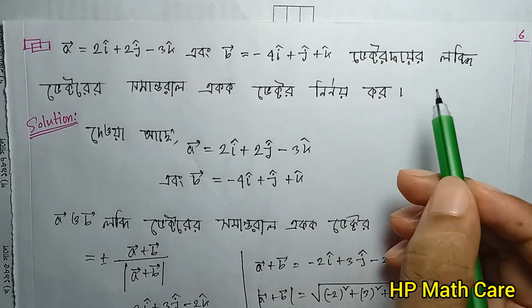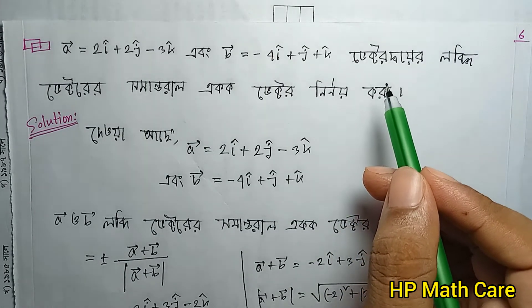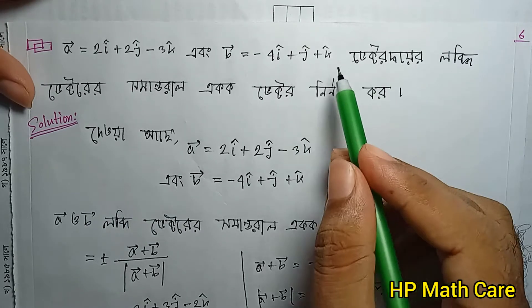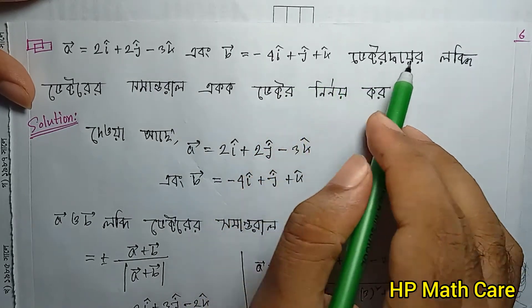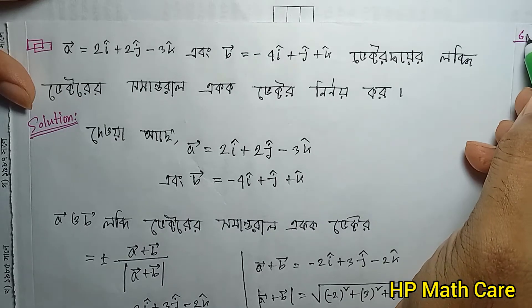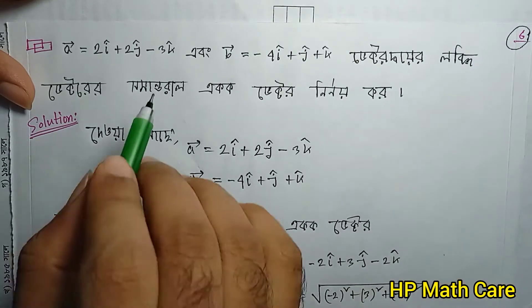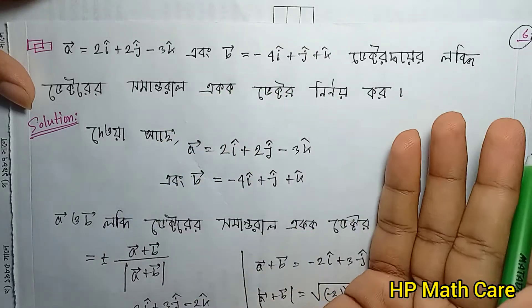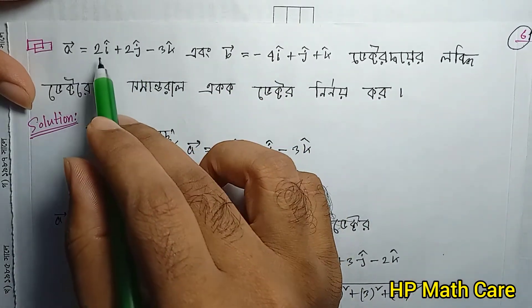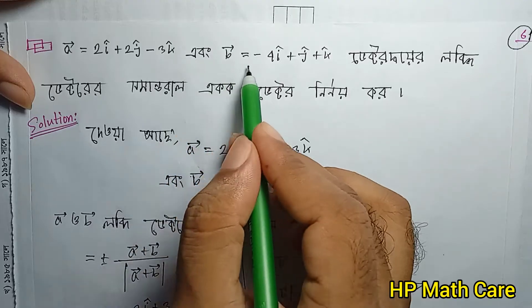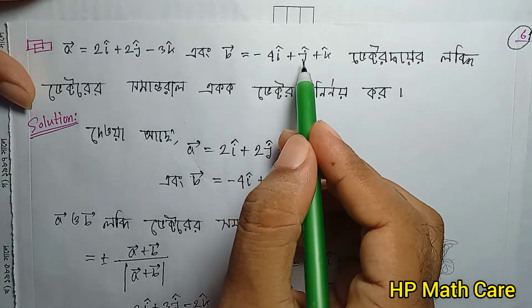This is an analytic and vector geometry sub-topic: element vector in plane and space. A vector is 2i plus 2j minus 3k. B vector is minus 4i plus j plus k.